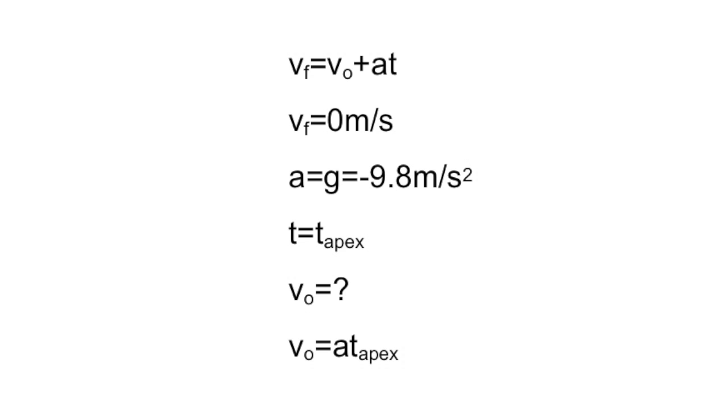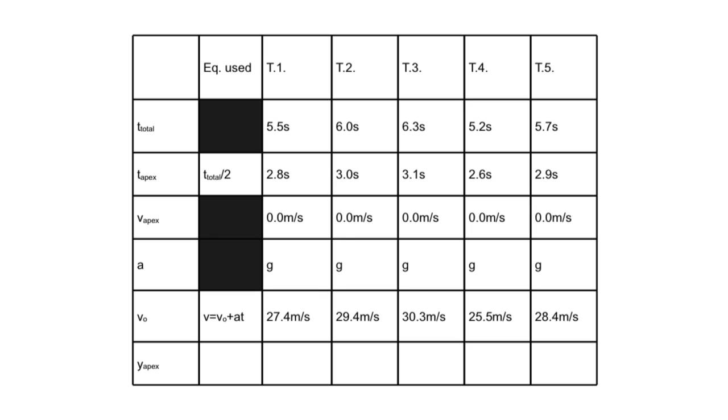To find the initial velocity of the object, we must use the first kinematics equation. A derivation of how to get the exact initial velocity can be seen above. An example of the data table can be seen here.